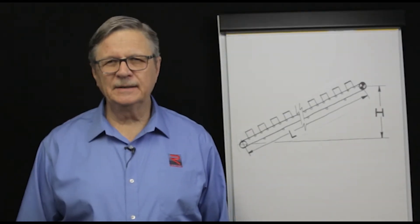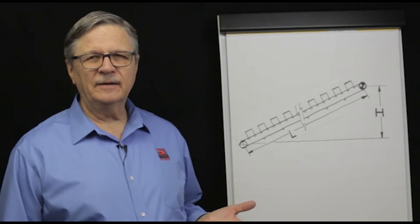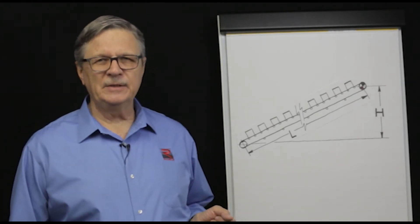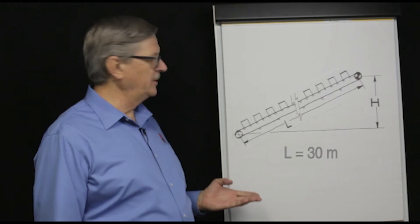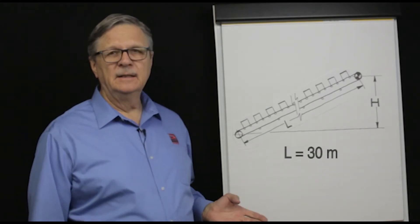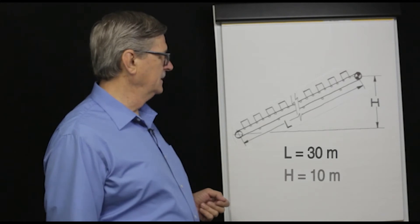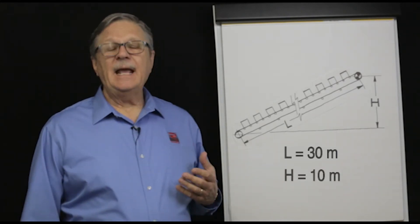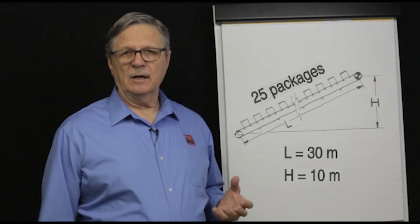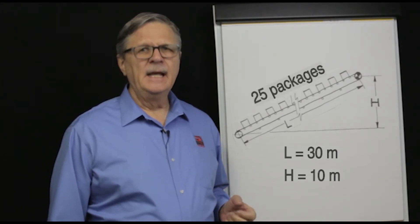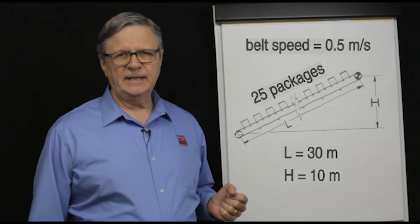To learn how to use this equation, let's make some assumptions and then plug the parameters in. Let's say the length of the conveyor is 30 meters, the material lift height is 10 meters, at any point in time there will be 25 packages on the conveyor, and the belt speed is 0.5 meters per second.